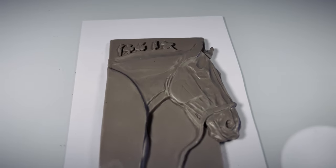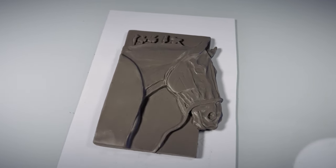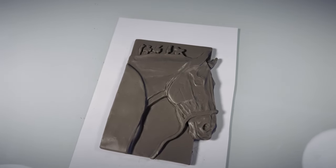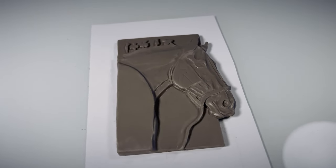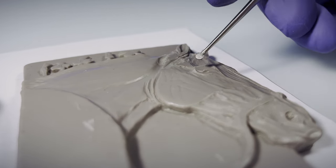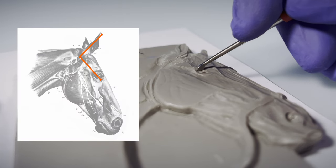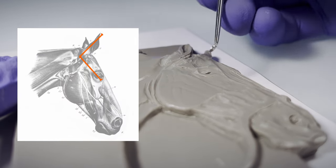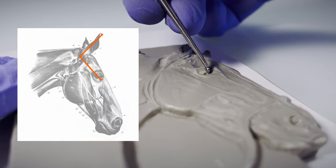Two key proportional measurements I learned to check for are the placement of the eyes in relation to the bony ridge of the top of the cheeks and the ear and eye proportions. For example, on most horses, the distance from the corner of the eye to the base of the ear is often very similar to the distance of the base of the ear to the tip of the ear.